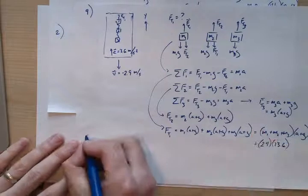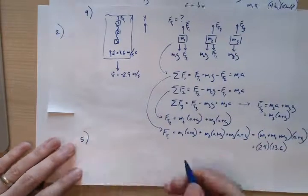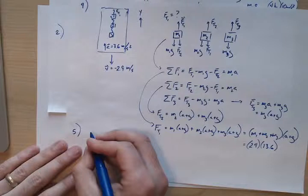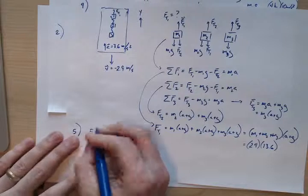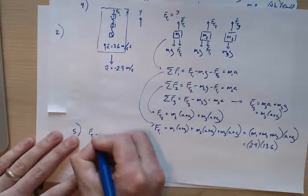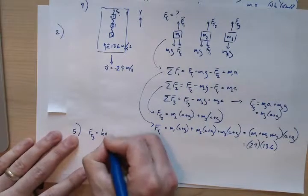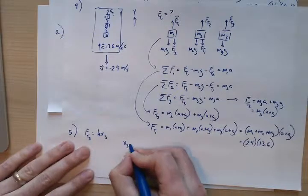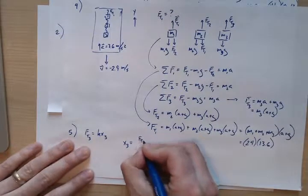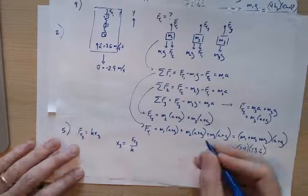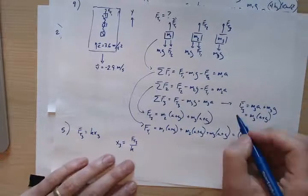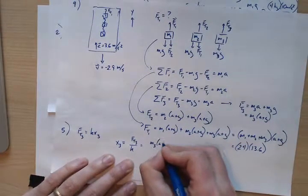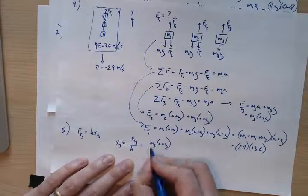For part five, we're asked how much the bottom spring stretches. We use Hooke's Law again. x3 equals the force of tension in spring three divided by k, which we already found. So x3 equals m3 times (a plus g) divided by k.